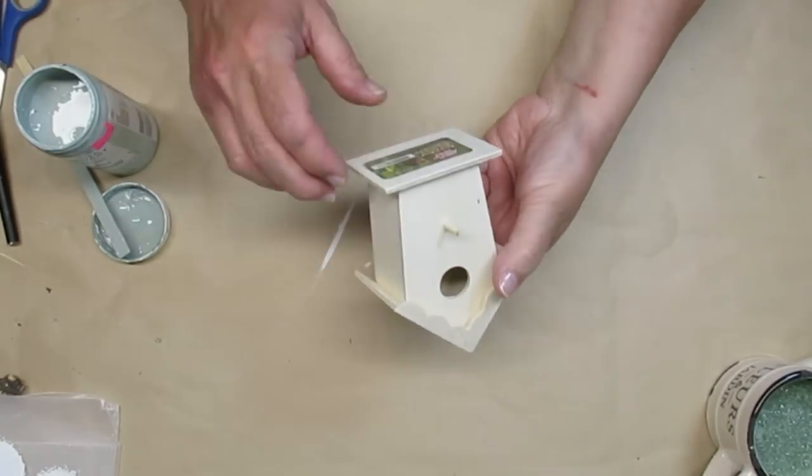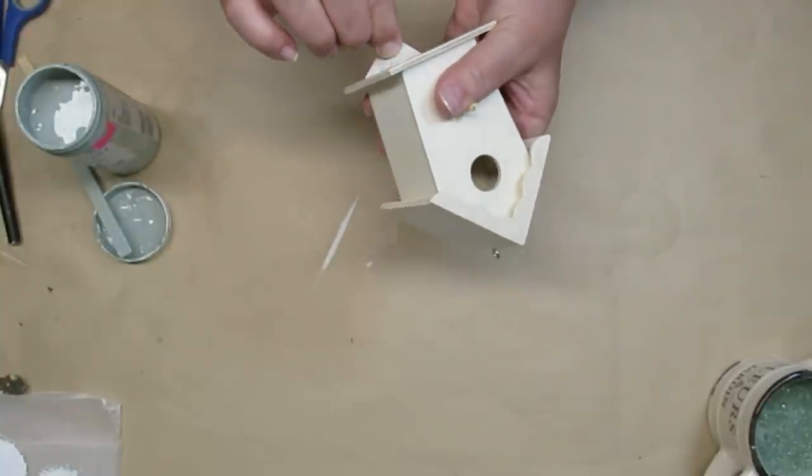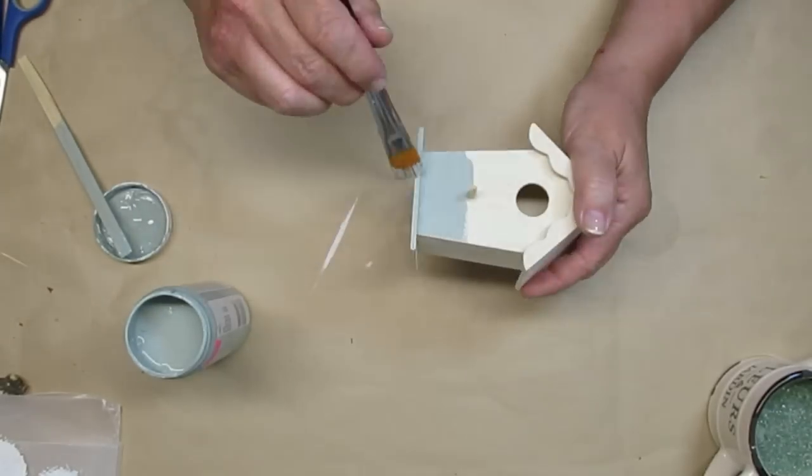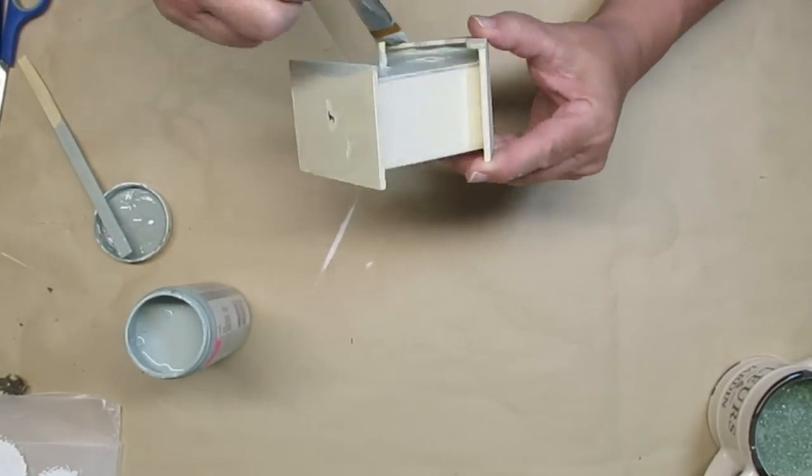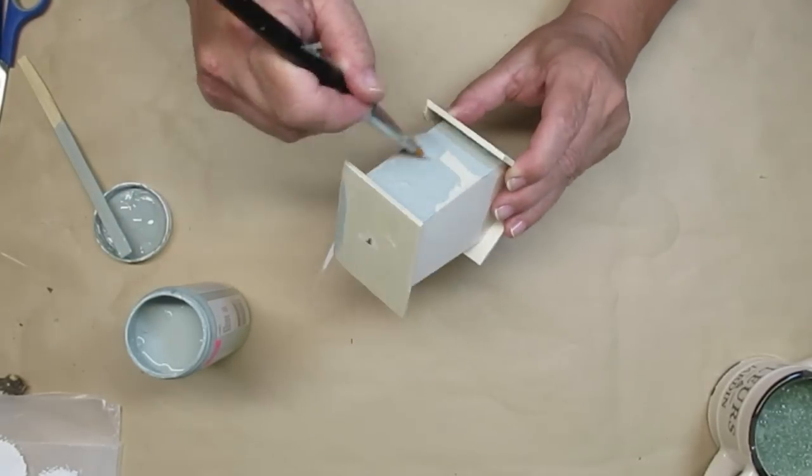I'm starting off with this little birdhouse that I got at my local Dollarama store. I'm going to take the tag off and I don't need the little hanger on the top. I'm painting the body of the birdhouse with a color that I mixed together myself. It's sort of a sage green color but you could use whatever color you'd like.